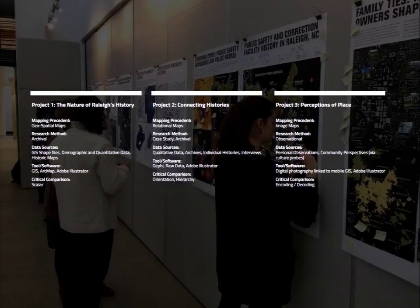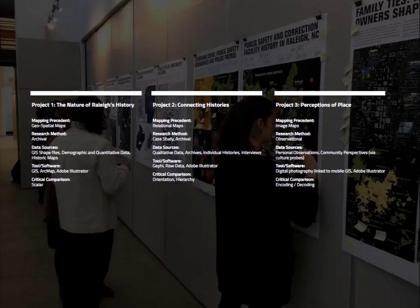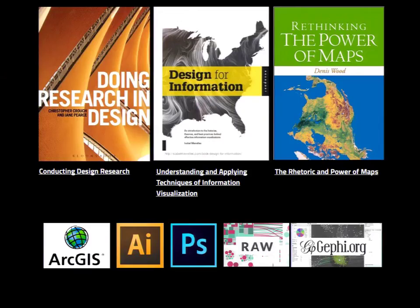Then we moved students out of the geospatial realm into more relational and network maps, trying to get at influences or causal and correlational relationships. And in the last project, we asked them to go out to the actual sites and areas they had been studying, to see evidence of how history contributed to the contemporary context and how people were using those spaces. Today we'll focus mostly on project one, because that's where we were using ArcMap.